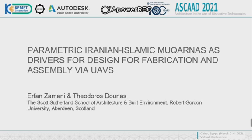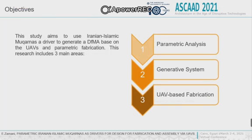In this study, we had a parametric approach to redesign Iranian and Islamic Mogharnas as a case study to create a construction DFMA — design for manufacture and assembly — based on UAV or drone. First of all, I would like to explain the three main research steps we had.